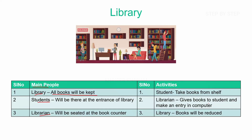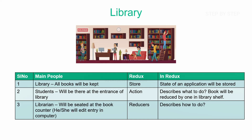Now how do student, librarian, and library relate to Redux architecture? In the library all the books are kept. The student will be at the entrance of the library. The librarian will be seated at the book counter and can edit the entry in the computer. In Redux architecture, when we compare all these three things, the library will be acting as a store, because in the library all the books are stored. Similarly, inside Redux, in the store, all the state of an application will be stored — whatever data my application is having, that entire data is stored inside the store.